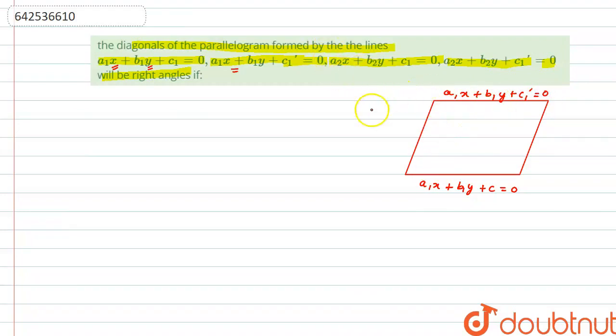Similarly, let the third side be a2x plus b2y plus c1 equal to 0. And in this also, the coefficient of x and y are same for these both lines. So, these both will also be parallel.